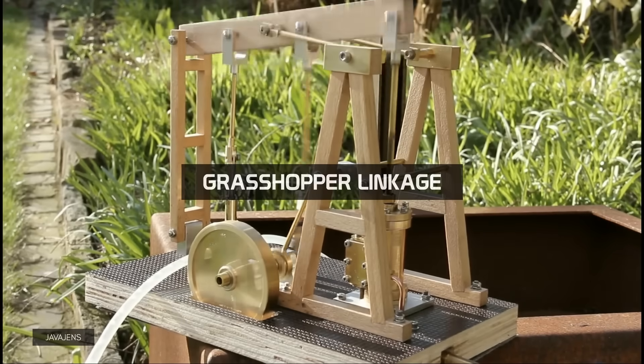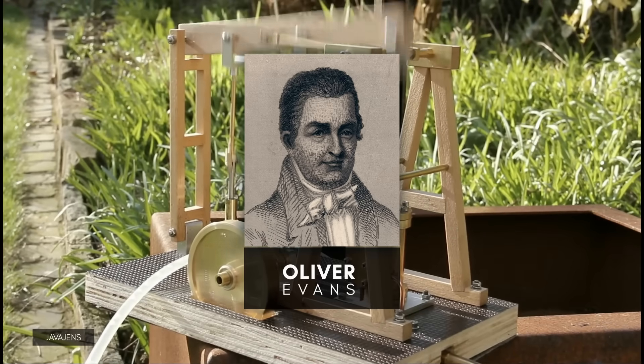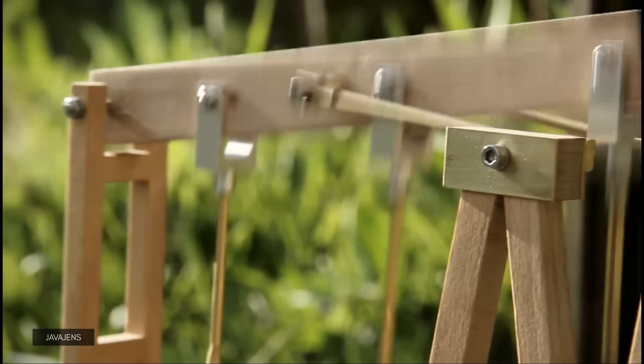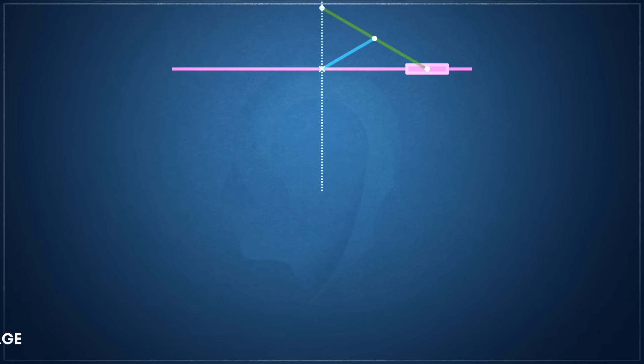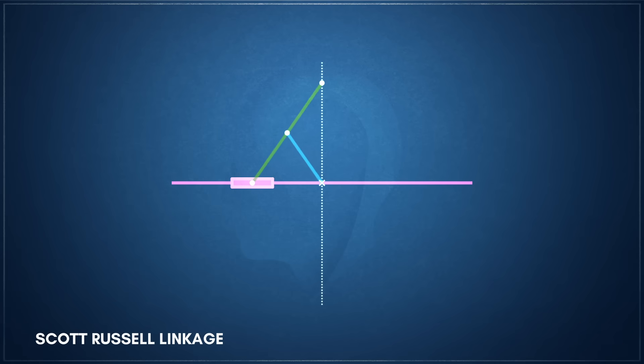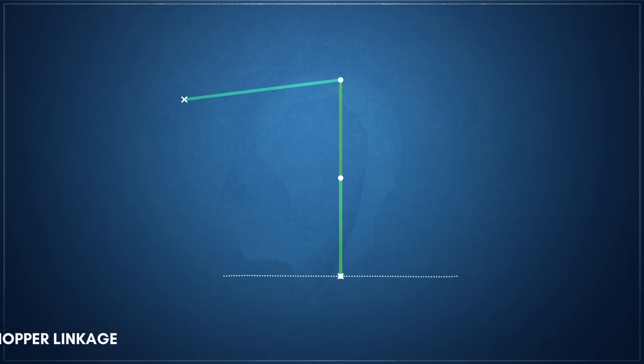Much like the Watts linkage, other linkages were designed specifically to address engine designs. The Grasshopper linkage, patented by Oliver Evans in 1801, for example, was the foundational element of the Grasshopper beam engine. Designed as a modification of the Scott Russell mechanism, a sliding linkage which translates linear motion through a right angle, the Grasshopper linkage replaces the slider with a very long swinging link. The link moves in a circular arc, but because the radius of the arc is so large, a small segment of its path is nearly indistinguishable from a straight line.